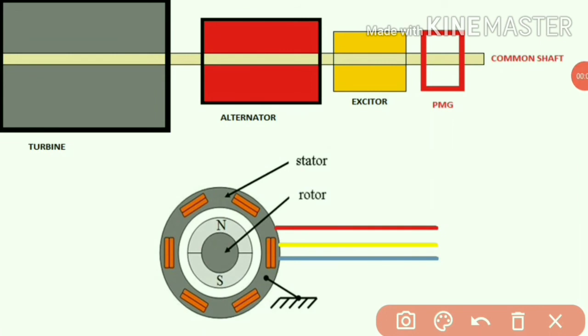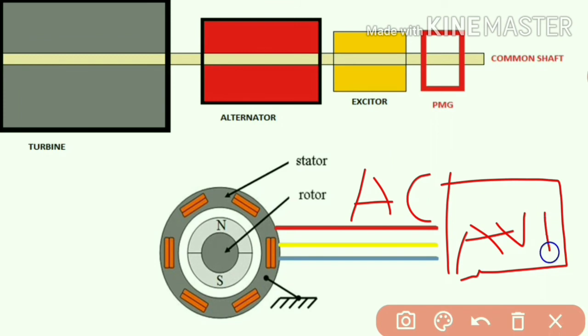So this voltage generated by PMG is in AC form and it is fed to the AVR. Guys, this AVR converts this AC into DC and supplies the exciter field.